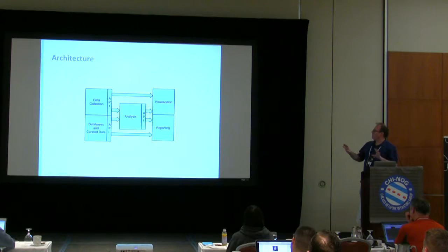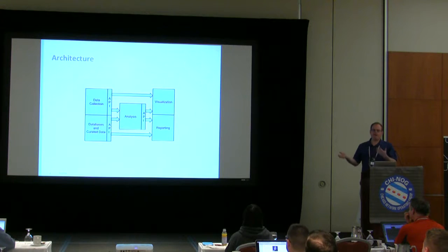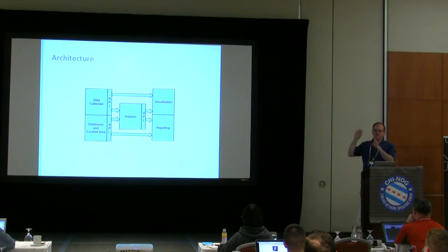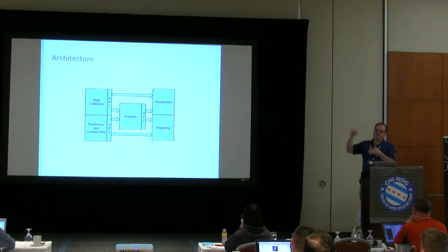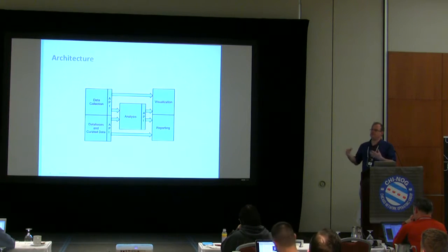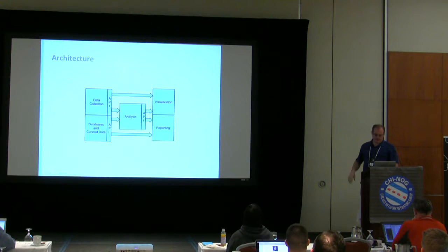The overall architecture of how we approach things involves quite a number of different pieces that fit together. On the left we have data collection — things like SNMP and NetFlow. Below that we have databases and curated, or canonical, data — things like lists of customers or configuration of circuits as they're meant to be built. In the middle we have analysis, which takes these two pieces and produces different sorts of analysis, like counting how much traffic we serve to each customer every month. Finally, you take these things and produce reporting and visualization.